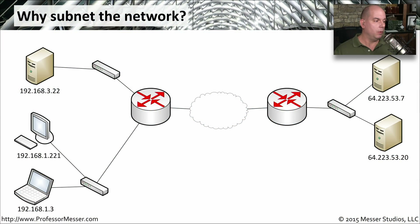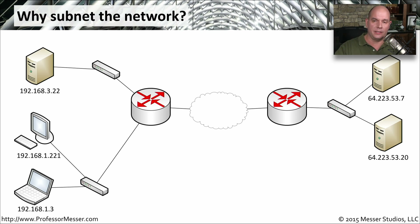When we're talking about IPv4 and IPv6, it's very common that we talk about subnetting the network. But why do we need to separate the network into these smaller pieces? Why can't we just all connect to the network and everyone can communicate with everyone else? There are obviously technical limitations with that. To be able to know where everyone else is on the entire network, especially a worldwide network like the internet, would require some extraordinary technical resources.